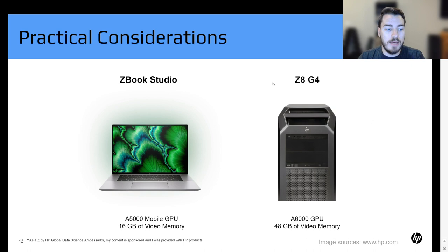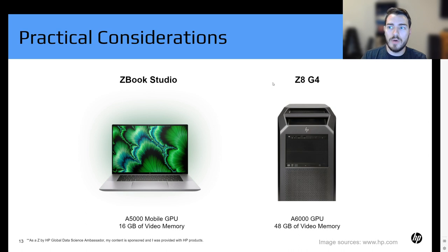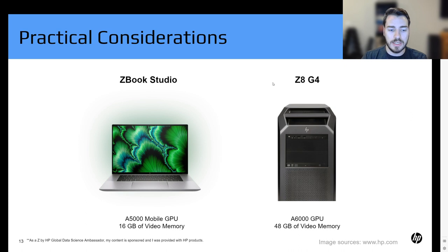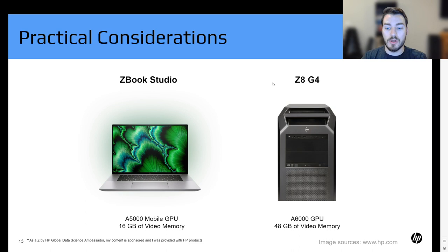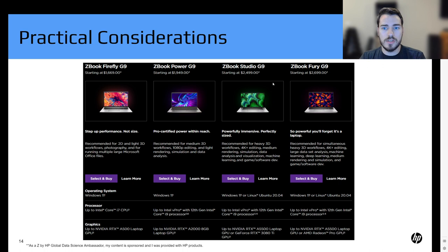For my use case, I'm sponsored by Z by HP, so I have a ZBook Studio and a Z8 G4. I've tested stable diffusion on both and they work great. It's a very big plus to have something like the A6000 in my desktop — I ran basically eight images in parallel, and in 40 seconds I had the output. If running on a CPU, it would be something on the order of 15 to 20 minutes before getting one image. GPU and bigger video memory are really helpful for these tasks.